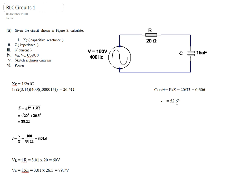Now we need to sketch a phasor diagram. When doing the phasor diagram, we have to consider the acronym CIVIL. In our circuit, it is a series circuit with the resistor in series with the capacitor, so the current is common to both. CIVIL tells us that in a capacitive circuit, the current I leads the voltage V.